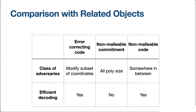The second difference between these three primitives is that we want to be able to decode. This is why non-malleable commitments can allow arbitrary polynomial-size adversaries — we don't really expect the receiver to decode; it's just a commitment. In non-malleable codes and error-correcting codes, we do expect the receiver to decode, which is why we cannot support any polynomial-size attacker.